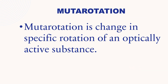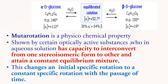Mutarotation. Mutarotation is the change in the specific rotation of an optically active substance. It is a physico-chemical property shown by certain optically active substances that, in aqueous solution, have the capacity to interconvert from one stereoisomeric form to another and attain a constant equilibrium mixture. This changes the initial specific rotation to a constant specific rotation with the passage of time.